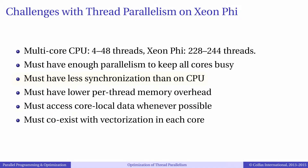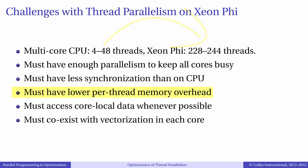Another challenge is memory overhead. If you have a fixed per-thread memory overhead, then going from tens of threads on Xeon to hundreds of threads on Xeon Phi means dealing with a greater memory requirement, while at the same time you have less memory available on Xeon Phi than you do on Xeon.